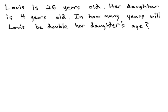In this video, we're going to take a look at a different type of age problem, where we're asked to find how long until a certain relationship occurs. We are told that Lois is 26 years old, her daughter is 4 years old, and we want to know in how many years will Lois be double her daughter's age.